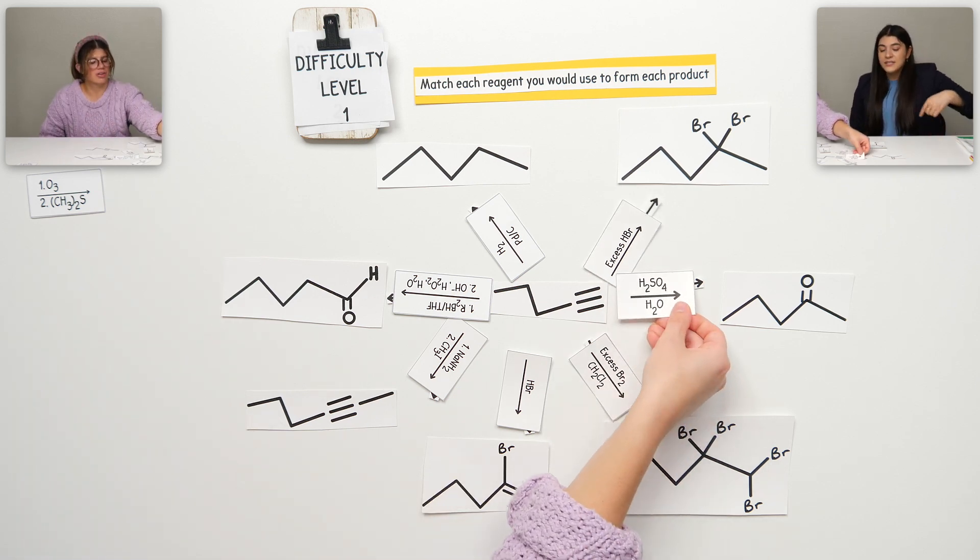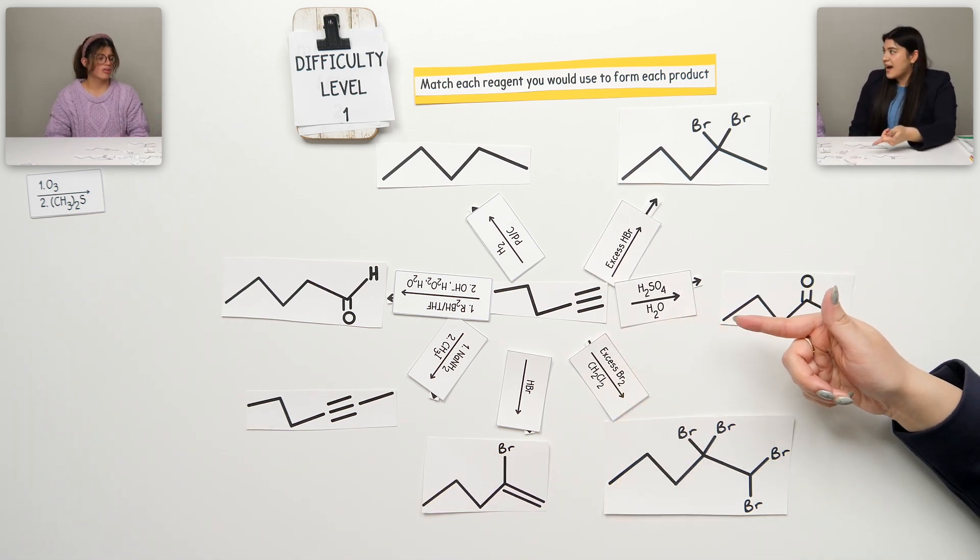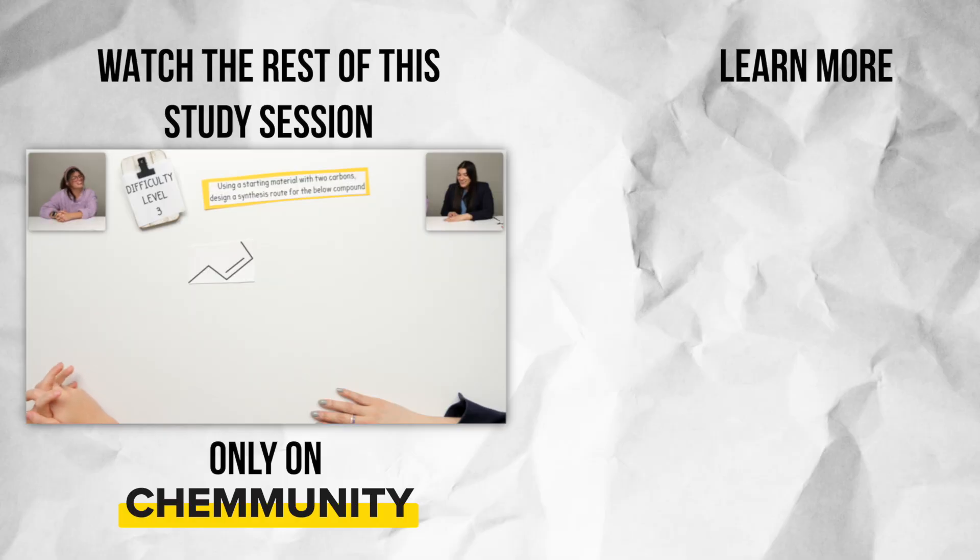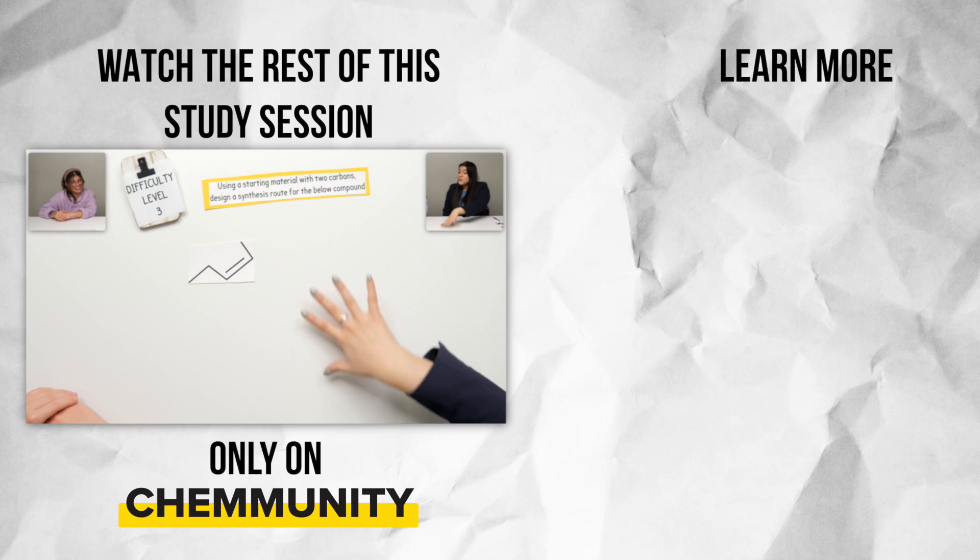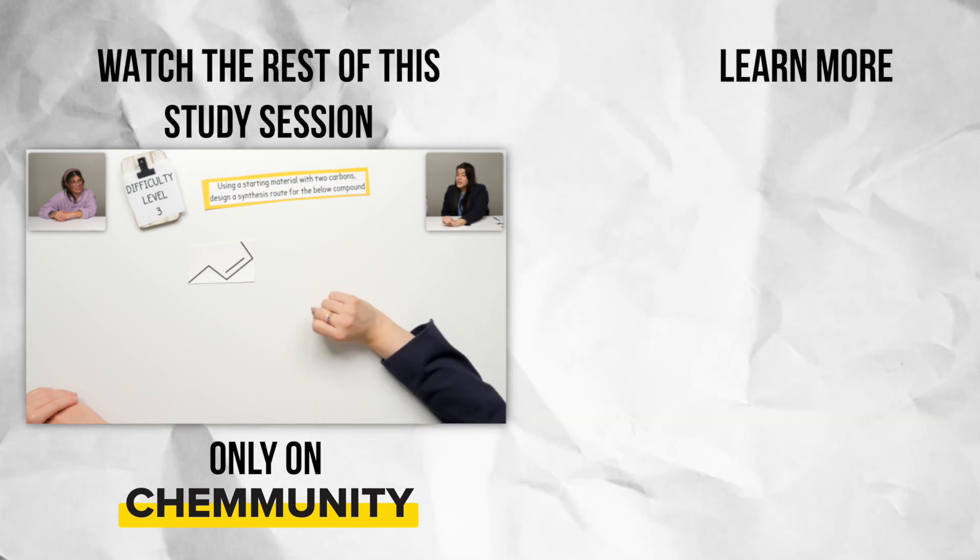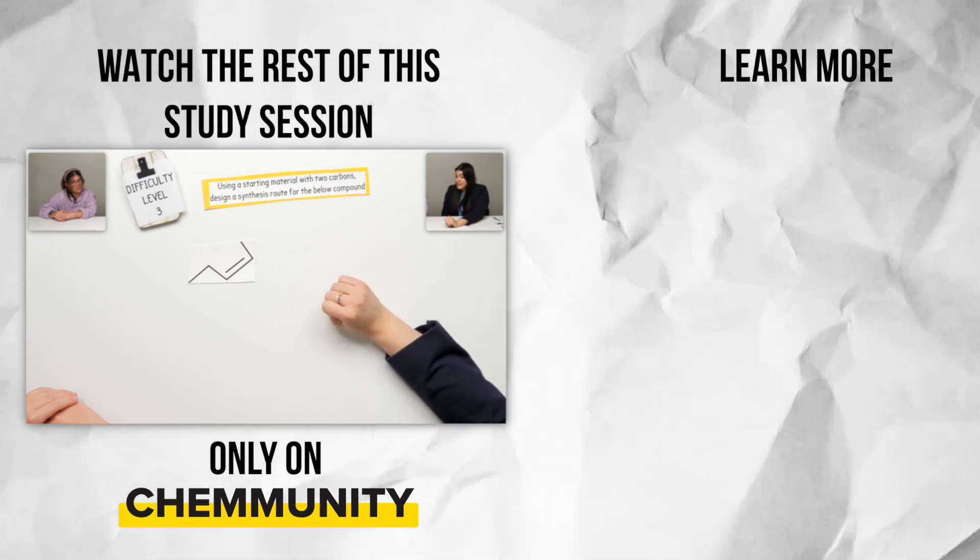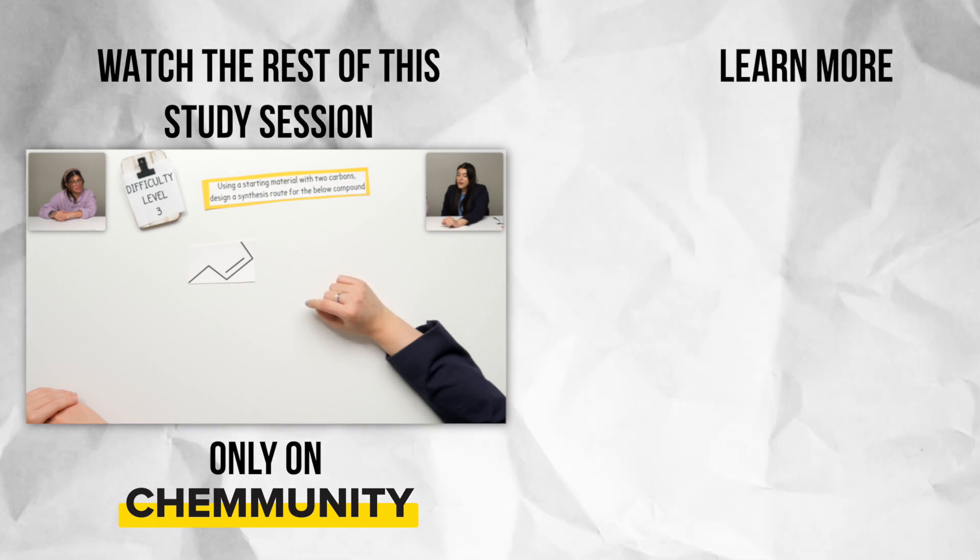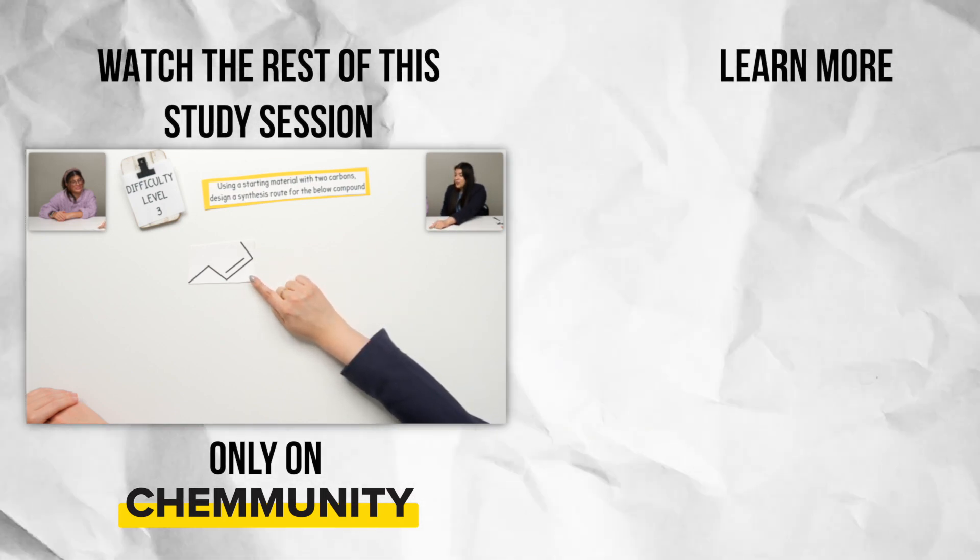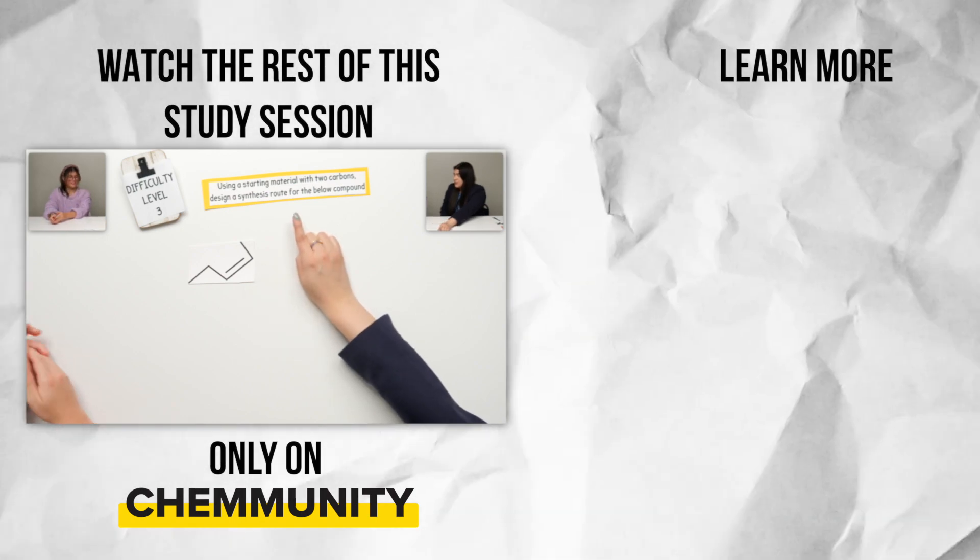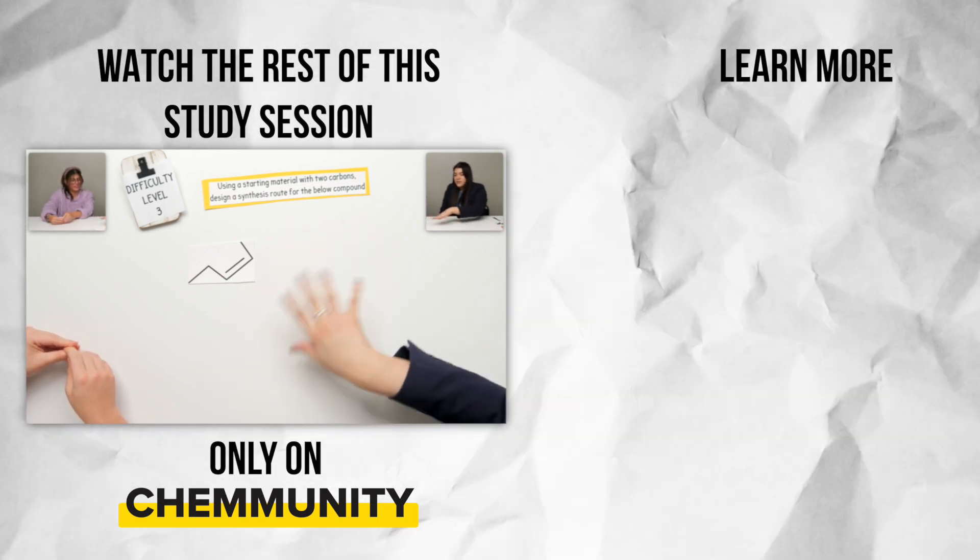I would say synthesis is probably the hardest one, in my opinion. I agree. I think so. So this question asks us, using a starting material with two carbons, design a synthesis route for the below compound. So this is our product. We're trying to figure out what was our starting material, so our reactant, and what did we use in between?